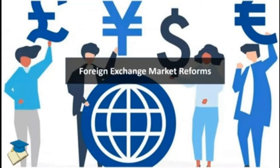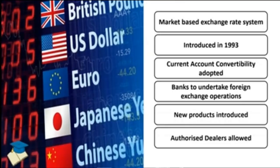The third category is foreign exchange market reforms. A market-based exchange rate system was introduced — earlier it was a controlled exchange rate system, now it is based on demand and supply for currencies. Current account convertibility was introduced, allowing domestic currency to be converted into any foreign currency. Banks were given more freedom to undertake foreign exchange operations, converting one currency to another, enabling them to generate revenue. Authorized dealers were also allowed to indulge in foreign exchange transactions. All these led to better development of the Indian financial system.